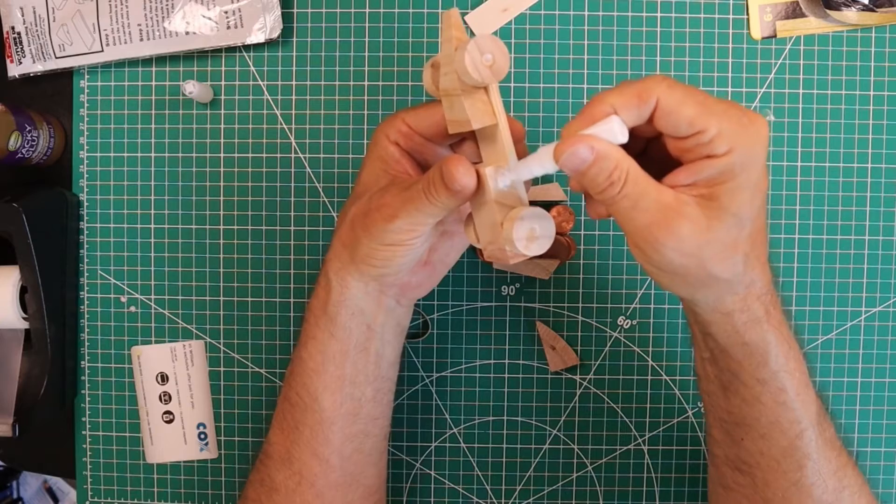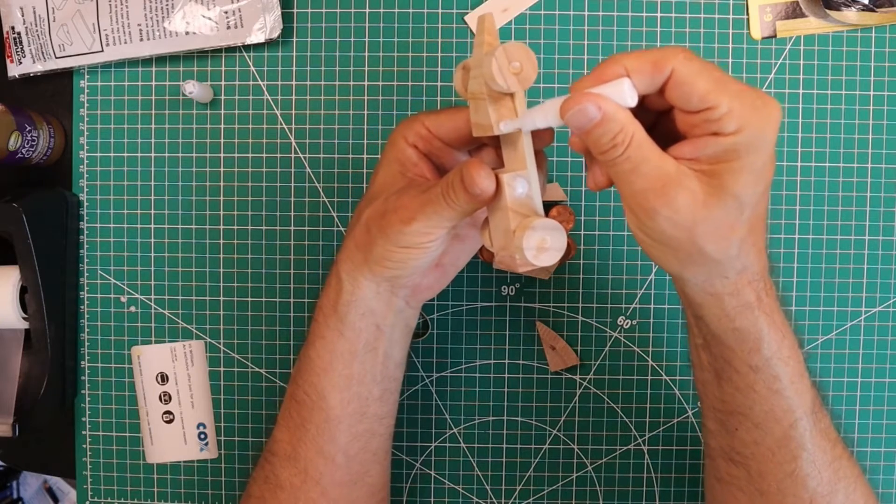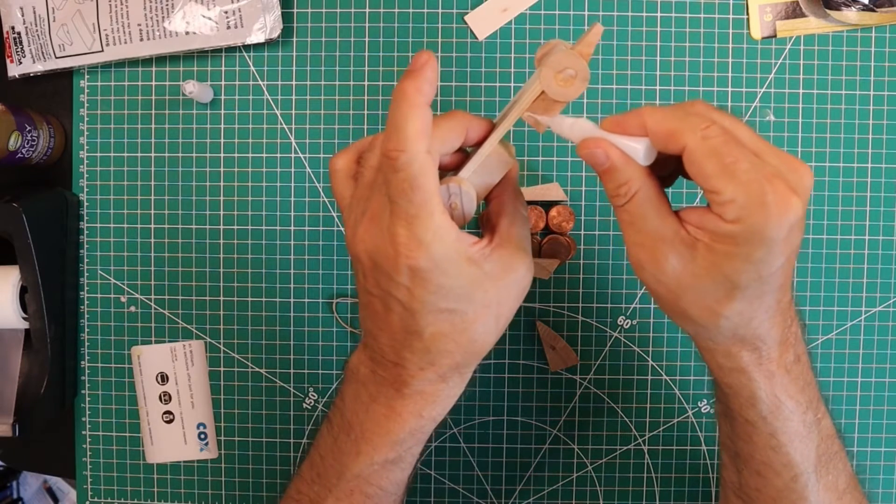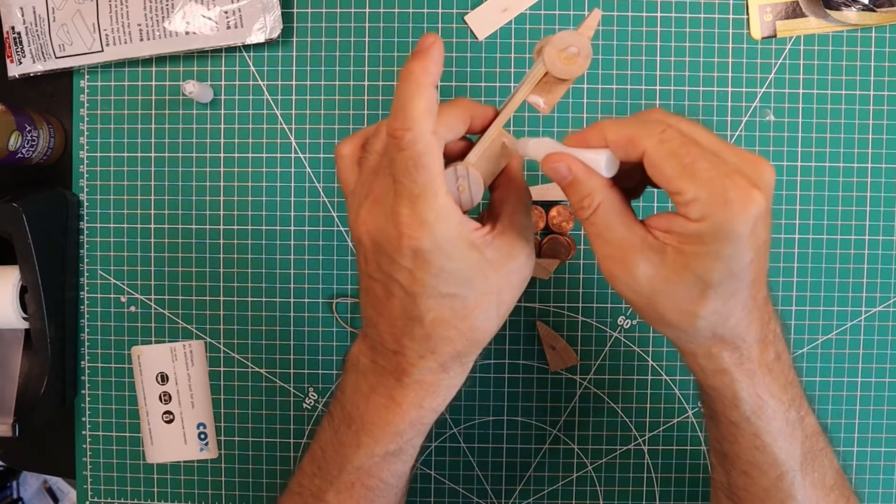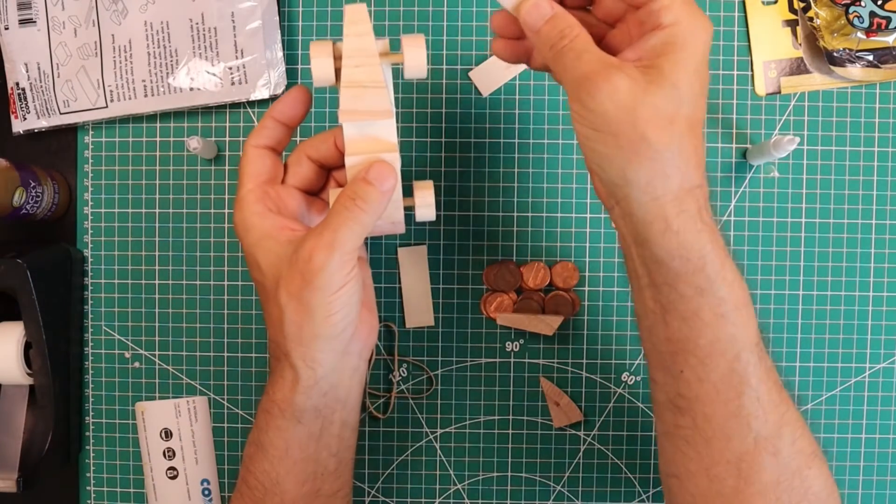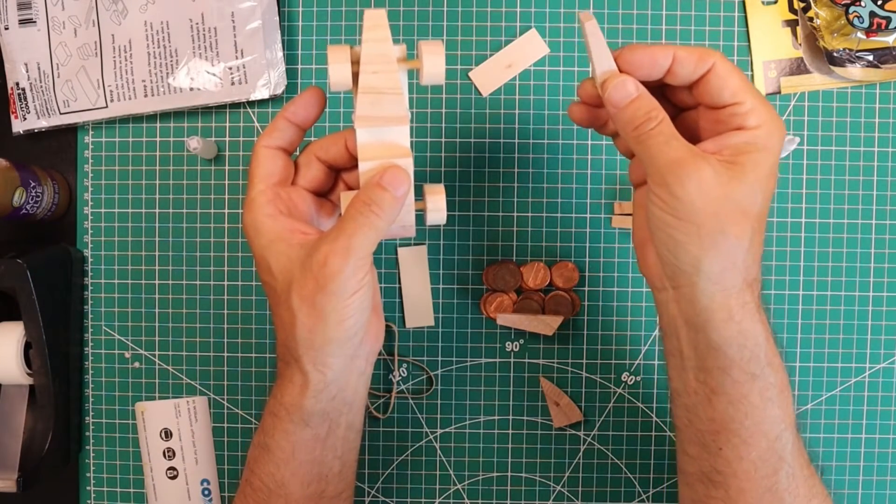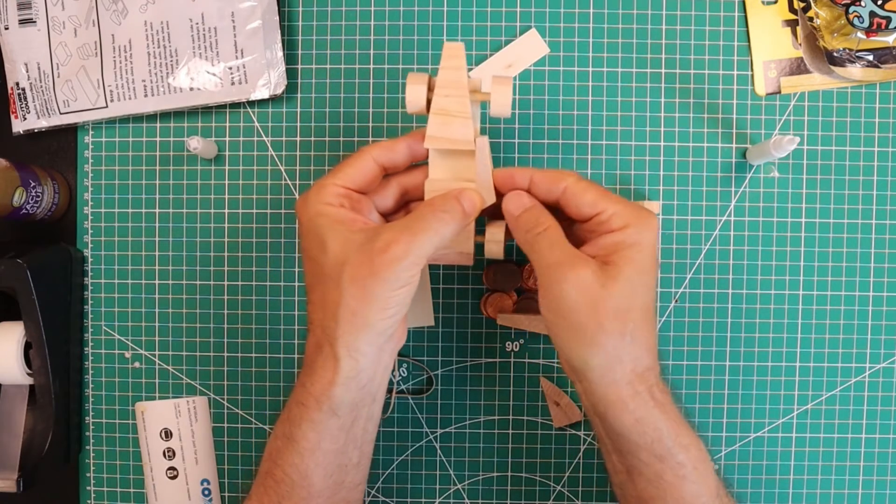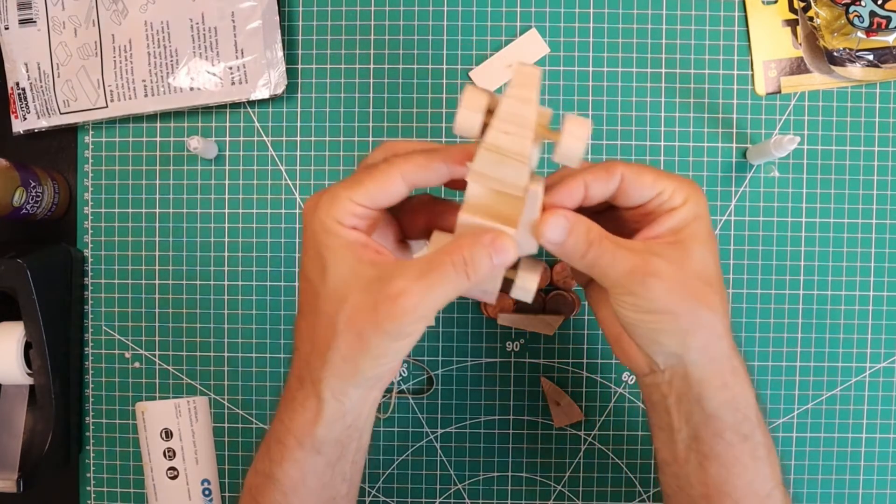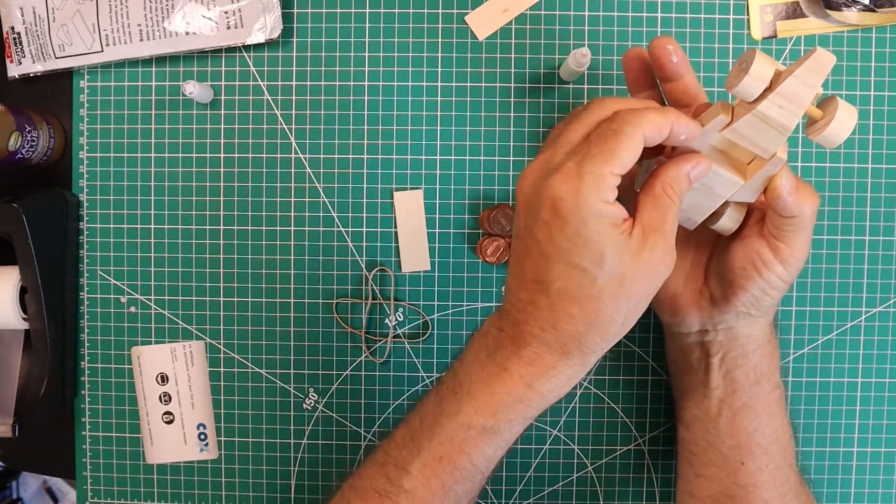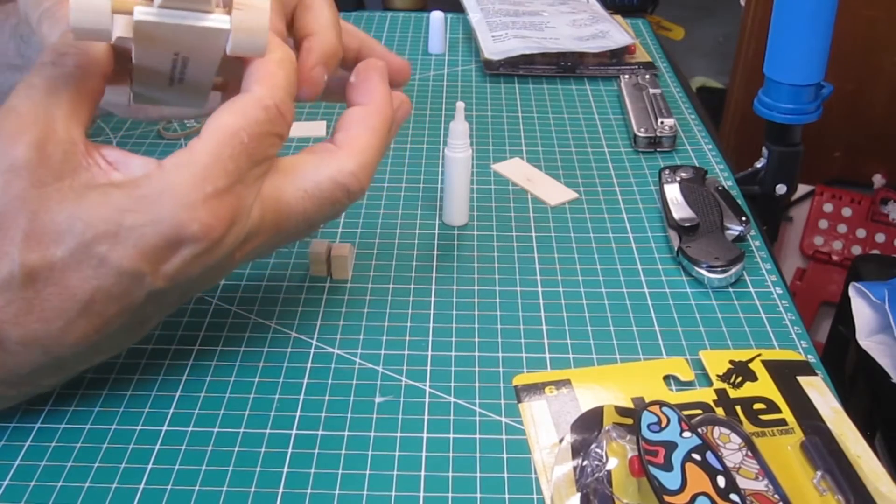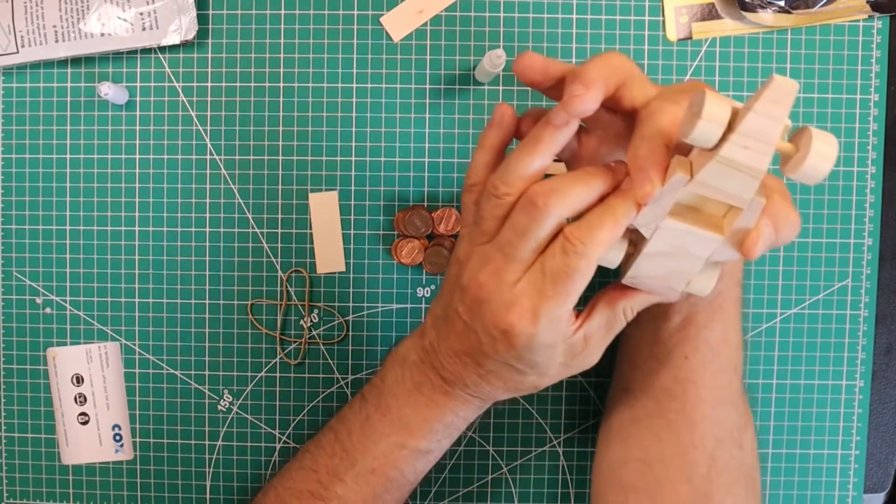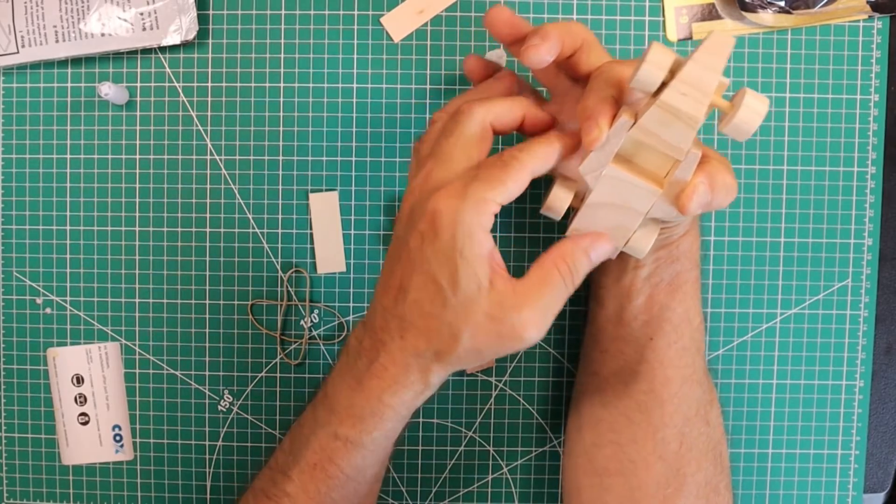Little bit of glue here. Little bit of glue here. Here. And here. The wider part is at the back. Right like that. There's one piece. Two pieces. Now we hold it firm with our hands for a little bit. Make sure it's squared off as best as possible.